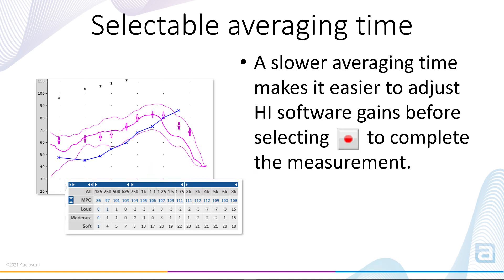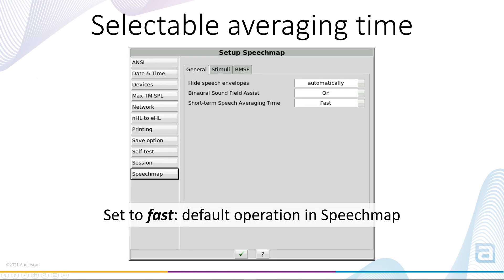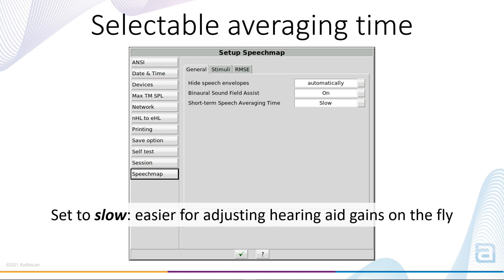This new feature for Verifit 2 and Axiom allows the selection of a slow averaging time for these live curves. This will slow down the display somewhat and make it more feasible to do some gain adjustments to target while the stimulus is still looping. From the main menu, open Setup and select SpeechMap from the left-hand side list. In the General tab, the new setting appears as Short-Term Speech Averaging Time. The Fast setting is the default behavior you're accustomed to. Setting this to Slow will improve the ability to evaluate match to target prior to the completion of the test.